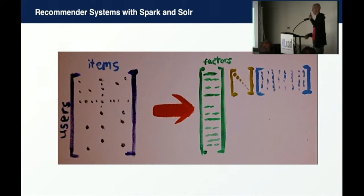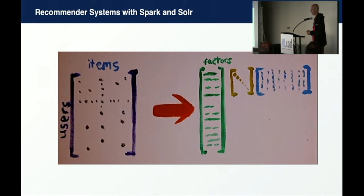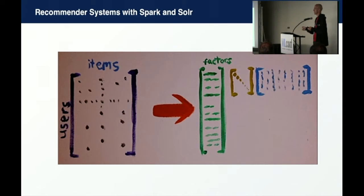Once you've got SparkML with collaborative filtering - SVD on canvas - the nice thing about having Solr as well is once you build the model, you batch-compute all the recommendations or item-by-item similarities, load them back into Solr, and you've got recommenders. You've got a service layer that already serves those recommendations for you.